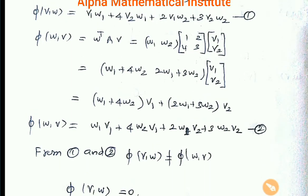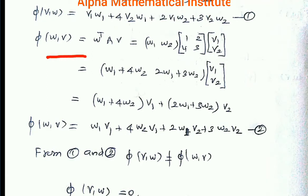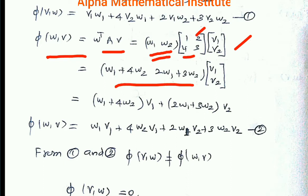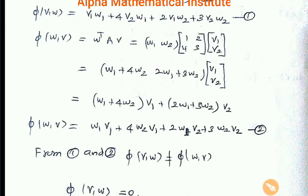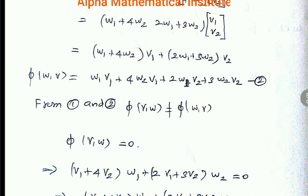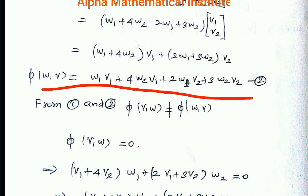Similarly, we calculate φ(W, V), which equals W transpose AV. W transpose is the row vector (W1, W2), A is 1, 2, 4, 3, and V is the column vector (V1, V2). Multiplying these matrices gives φ(W, V) = V1·W1 + 4·W2·V1 + 2·W1·V2 + 3·W2·V2. Call this Equation 2.